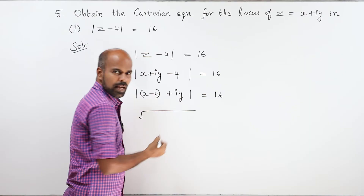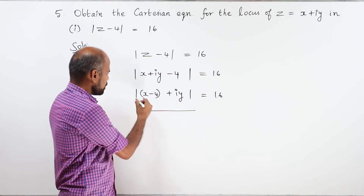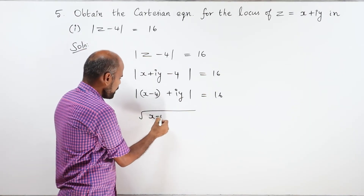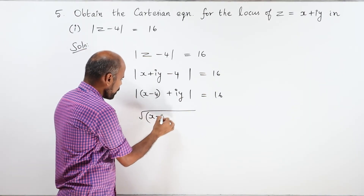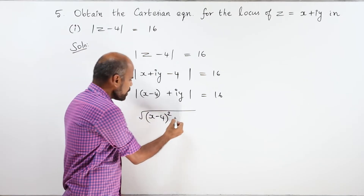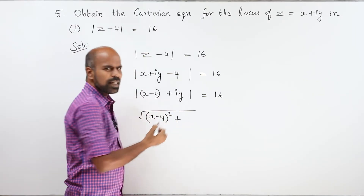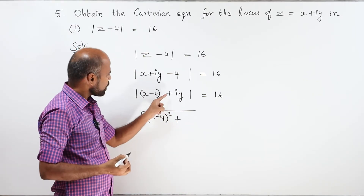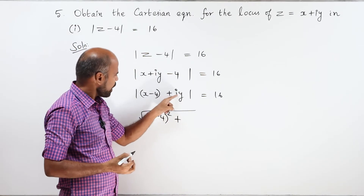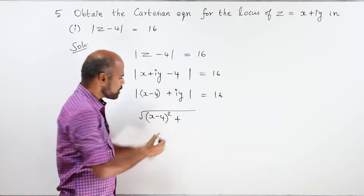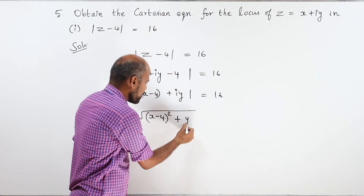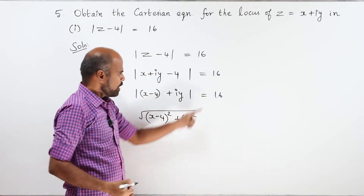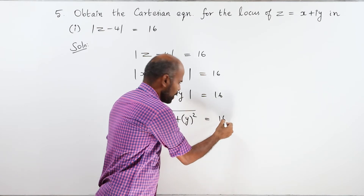Root over real part: x minus 4, squared, plus imaginary part — the coefficient of i is y — squared, is equal to 16.